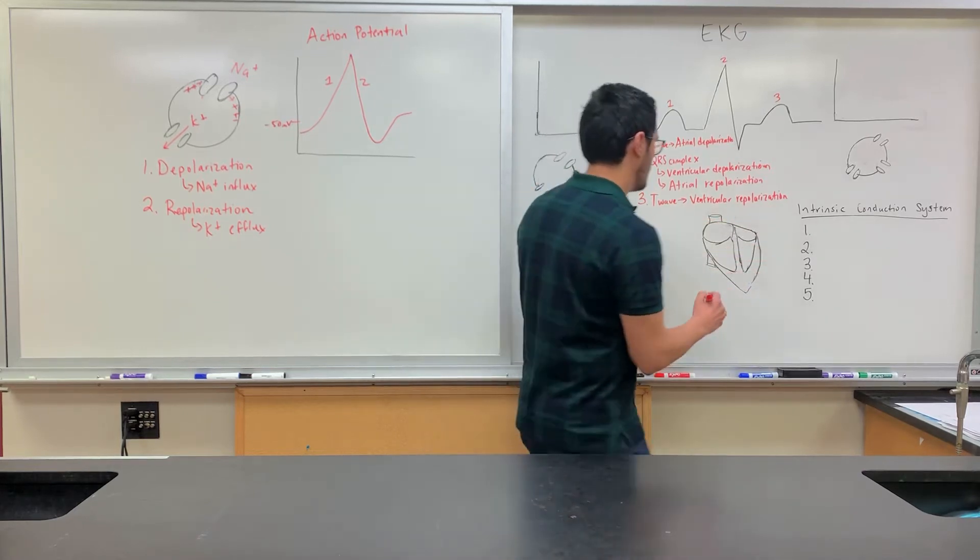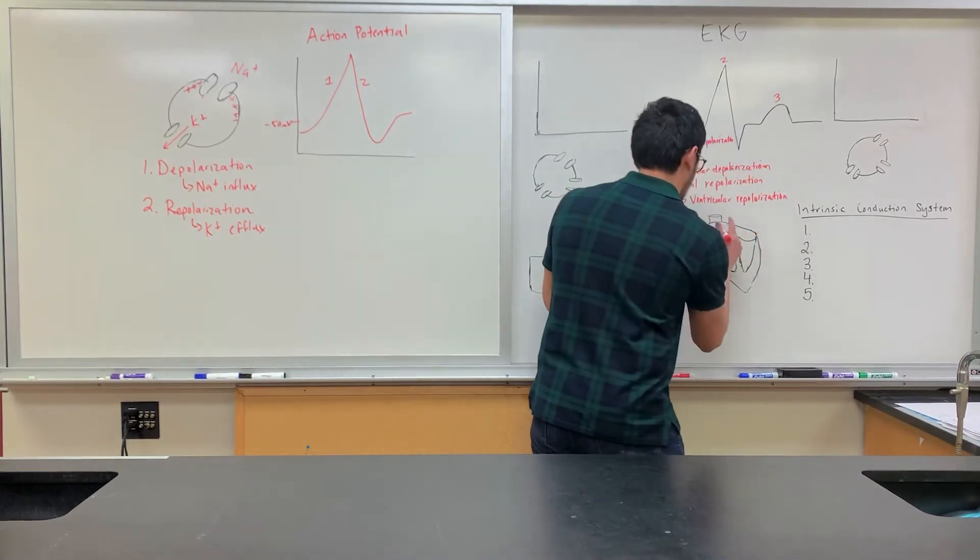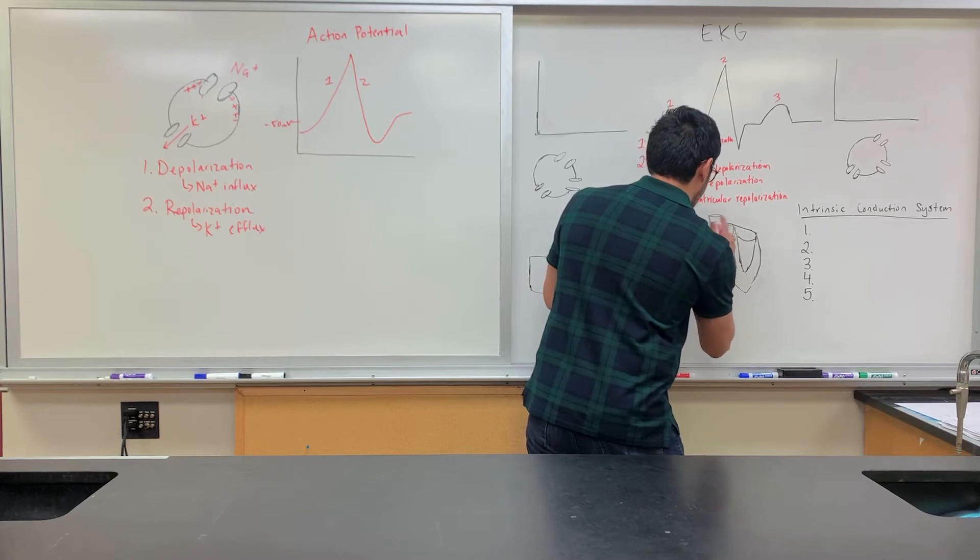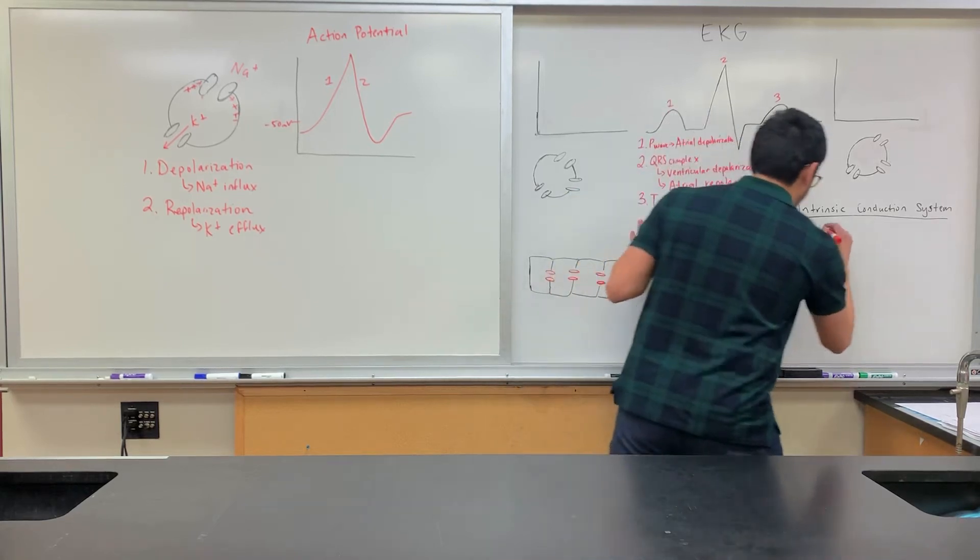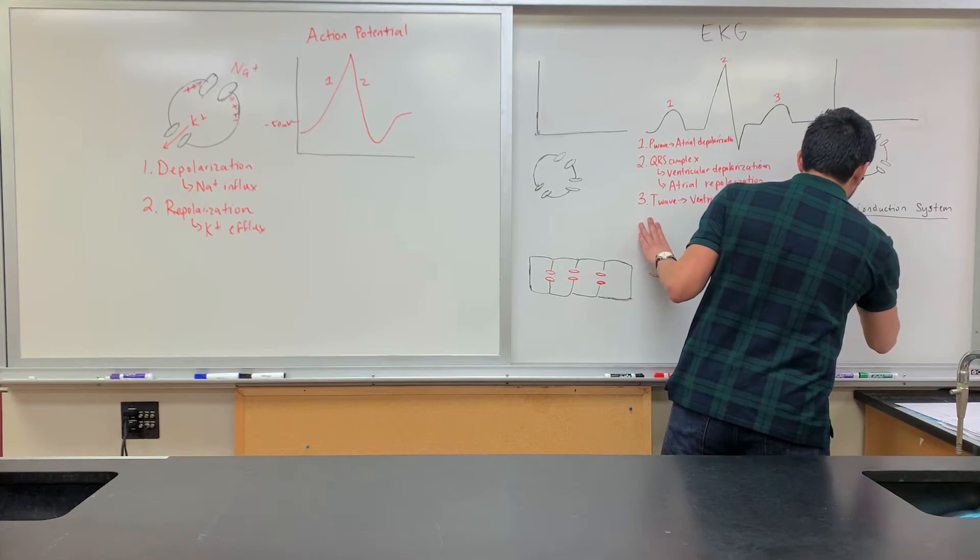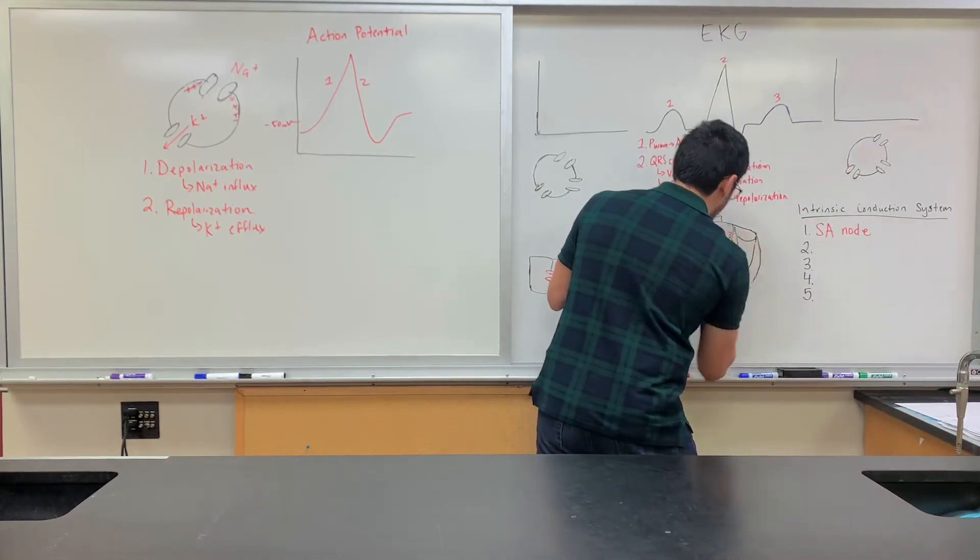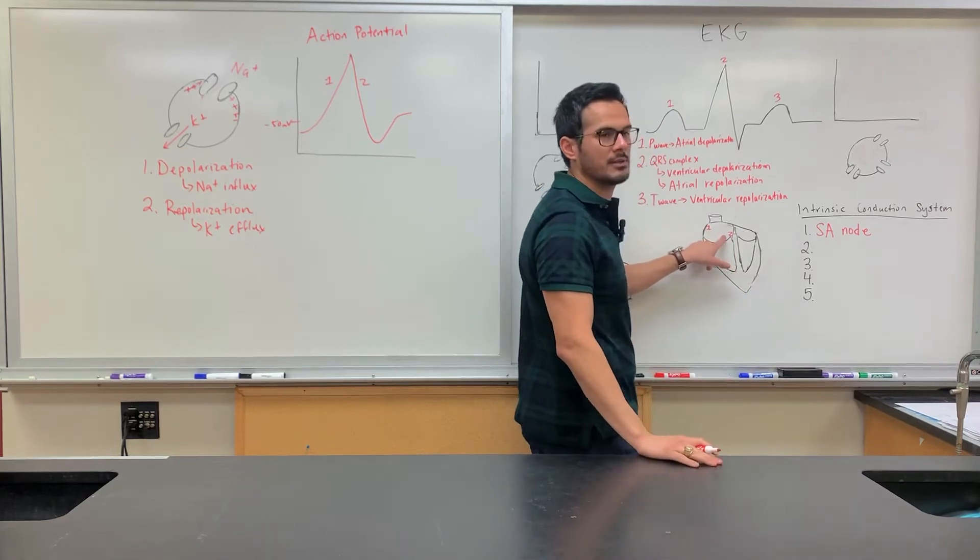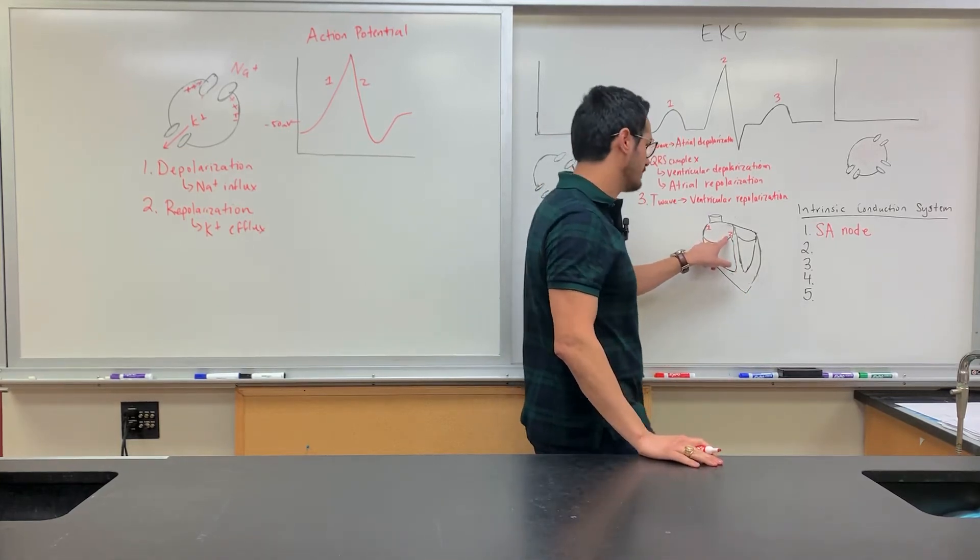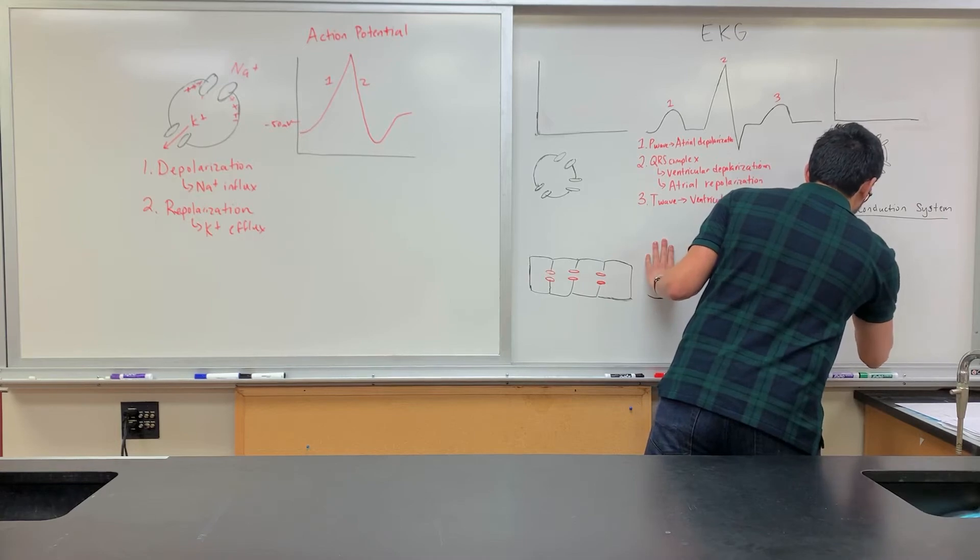What are some of the players there? Yeah, so number one, this is the SA node or the sinoatrial node. Then number two is what? Which one is that? That's still within the right atrium. Atrioventricular node. Yeah, atrioventricular node.